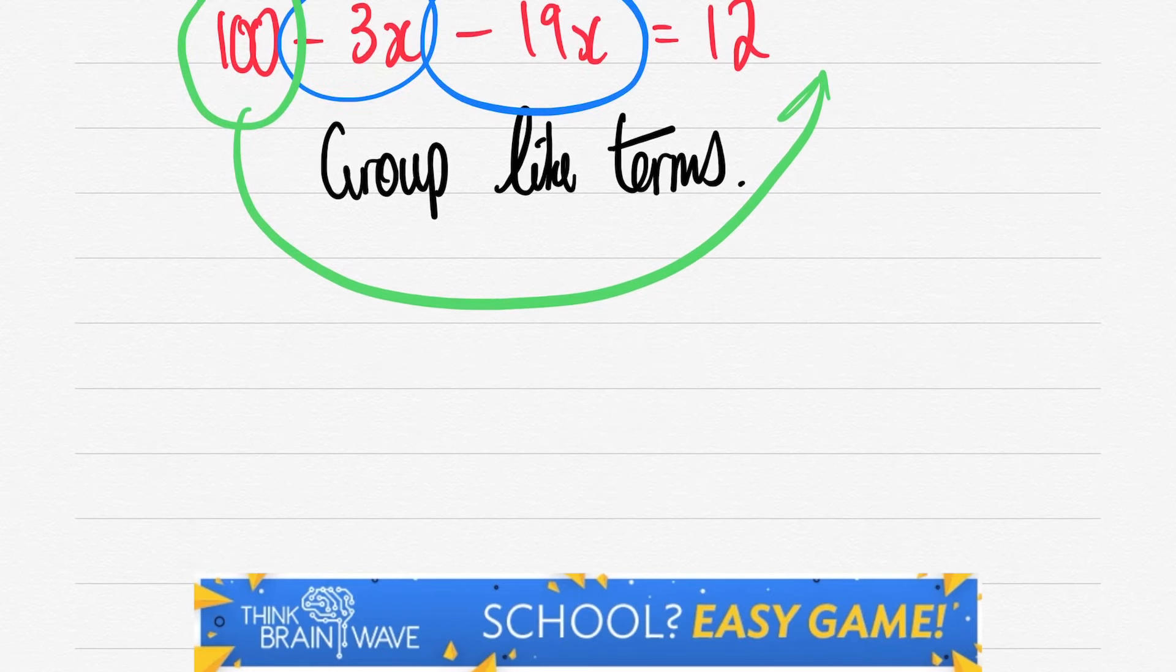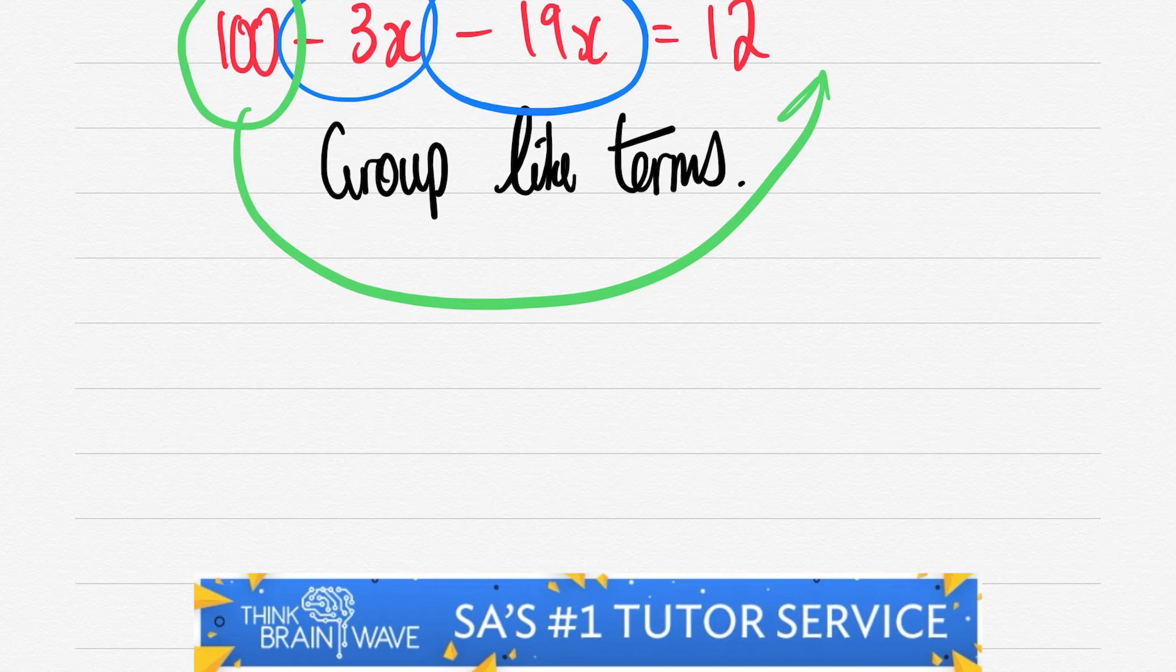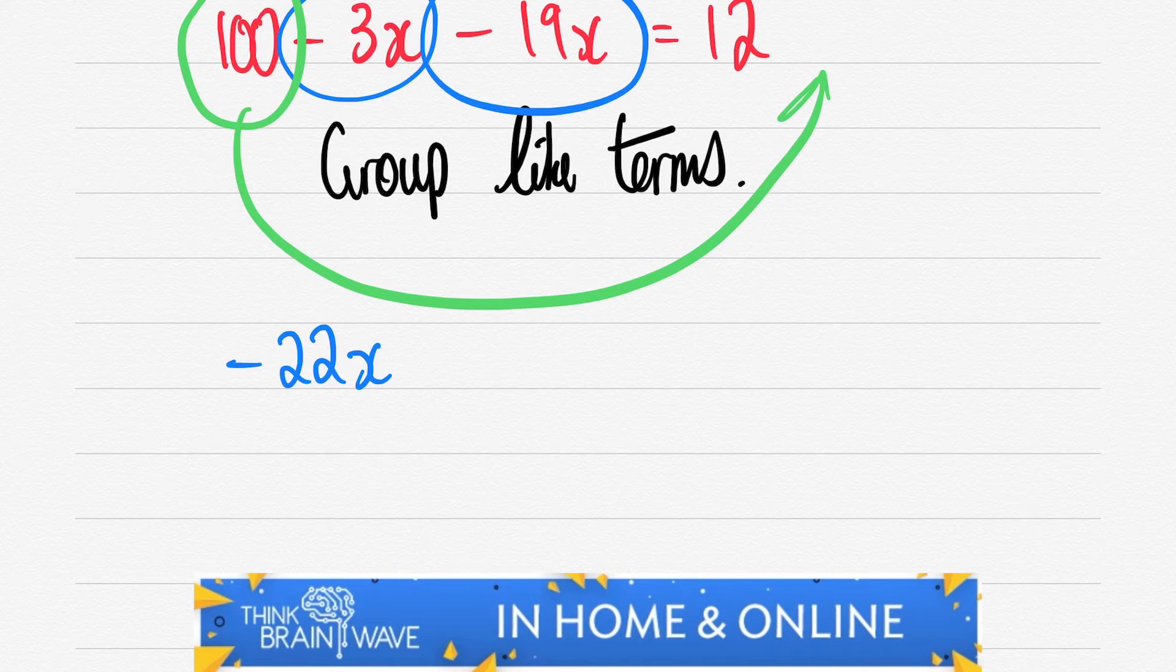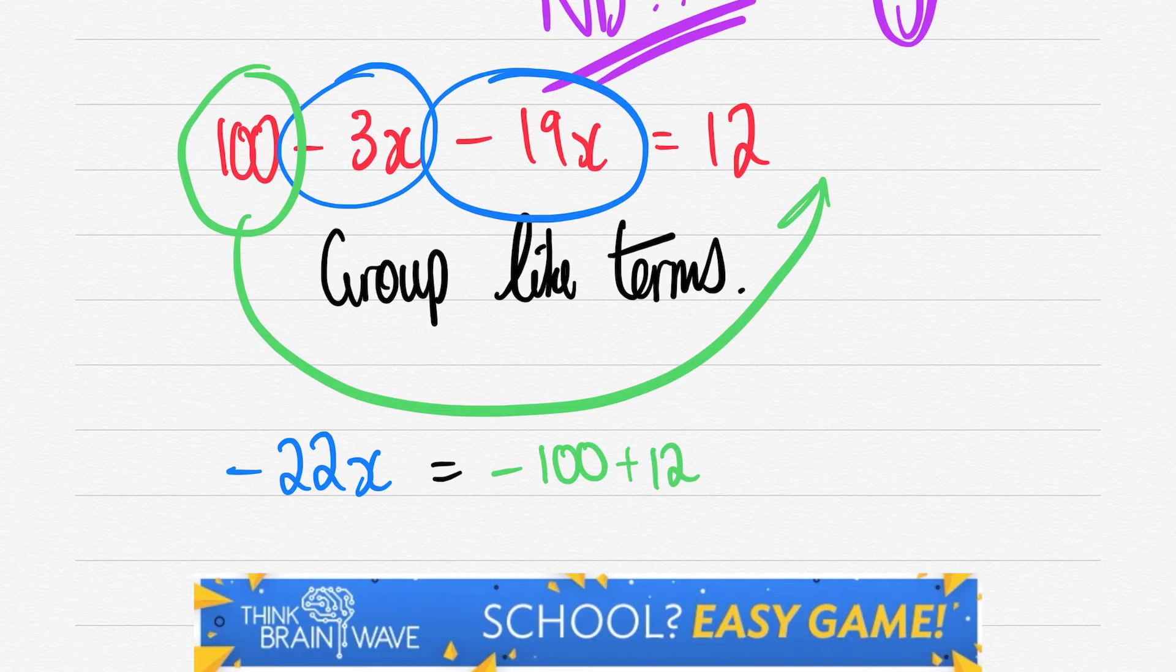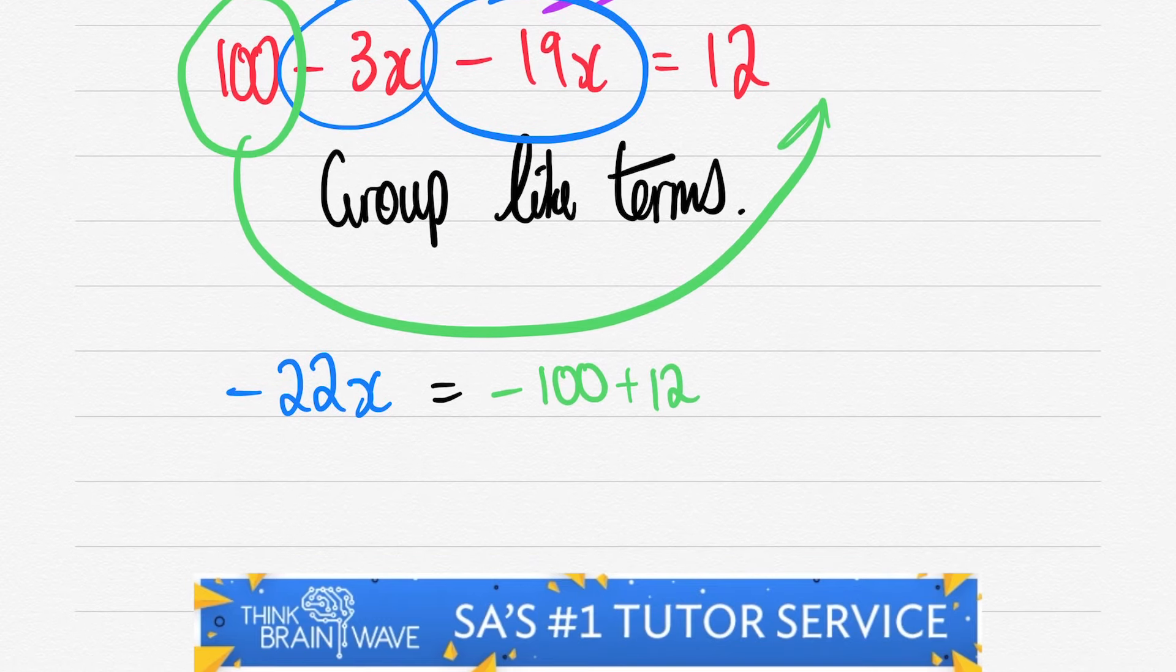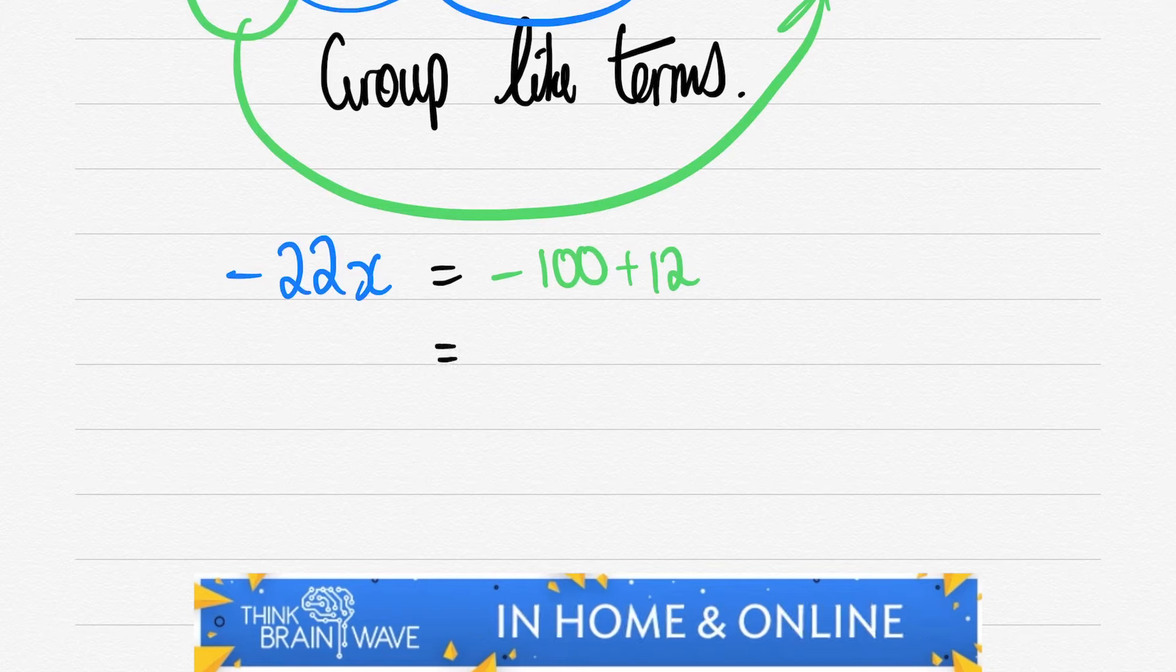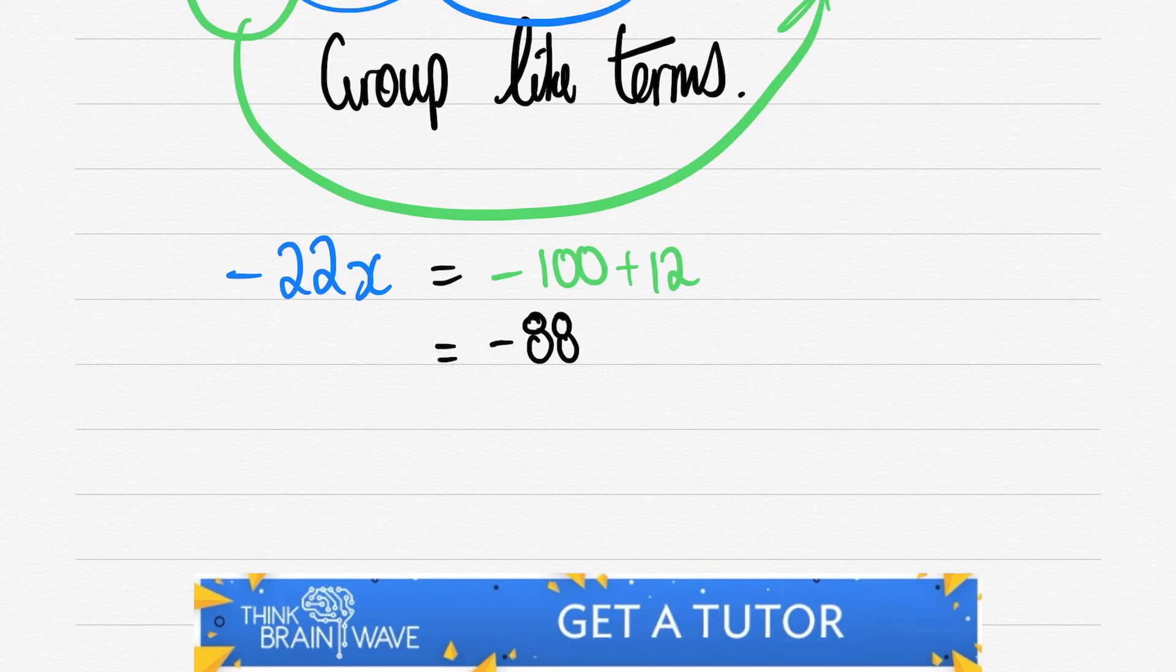So we'd say -3x - 19x which will get you -22x and on the right hand side once we take the 100 across it becomes 12 - 100 or -100 + 12. Either way doesn't really make a difference. That gives us -88 on the right hand side and -22x on the left hand side.